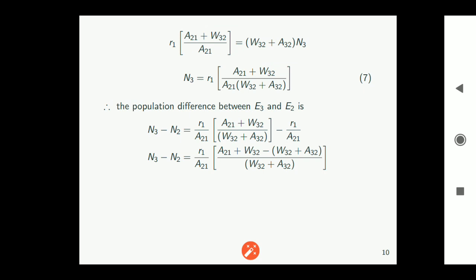Now we have the population of n2 also we have the population of n3. Therefore we can take population difference between the two states. So if you substitute equation 6 and we have equation 7 in this slide, one can easily calculate n3 minus n2. n2 is given by r1 divided by a21. r1 by a21 is common. So take common outside and do algebraic simplification. You get the population difference between the two states as equal to r1*(1 minus a32/a21) whole divided by w32 plus a21.